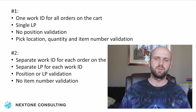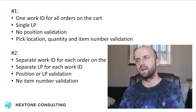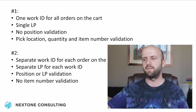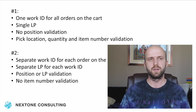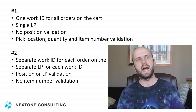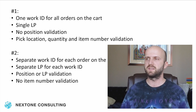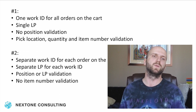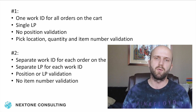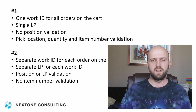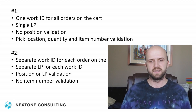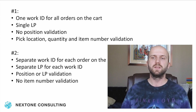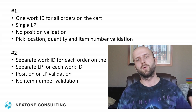Another shortcoming of the first approach is that there is no position validation. When the picker goes and picks an item, they can put it into any of the 15 bins. So it would be beneficial for the picker to have an invoice, picking list, or sales order confirmation showing which item should go to which bin — but there is no system validation or guidance indicating that a picked item should go to position number three or position number five. That's a missing component in the first scenario. However, pick location, quantity, and item number validation does exist and works on either the picking or putting side.